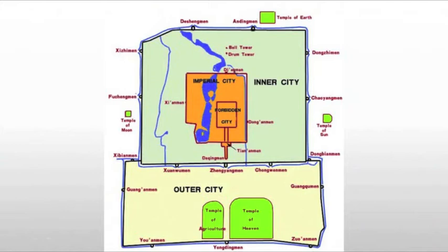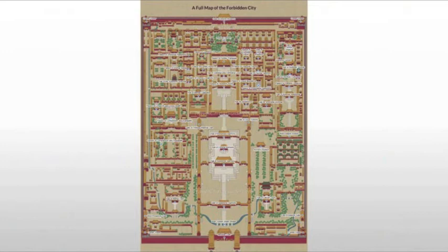When we look at the Forbidden City itself, you'll notice it is laid out on a classic grid pattern and it is very symmetrical. This is really the Chinese trying to impose organization — to impose civilization on the landscape — something we'll get into more in a minute.